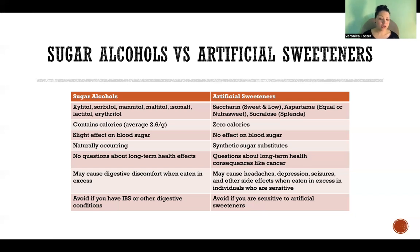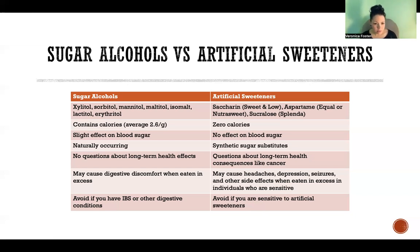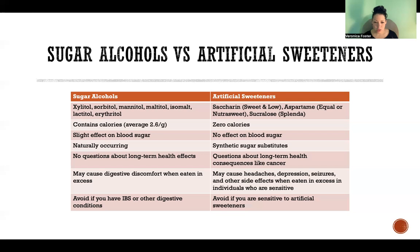Sugar alcohols still do contain calories — an average of 2.6 calories per gram. In my previous video I gave a breakdown of exactly how many calories per gram you get for each sugar alcohol. Compared to artificial sweeteners, which do not contain any calories — they are zero calories.